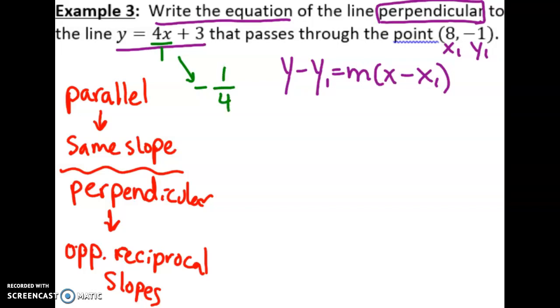So our new slope that we're going to use is negative one-fourth. In order for lines to be perpendicular, they need to have opposite signs and reciprocals. Let's go ahead and plug in this point and this slope: y minus my y₁, right here negative 1—well, I got a double negative, let's turn that into a plus—equals m, my new slope negative one-fourth, not the original, x minus my x₁, which is right here, 8.